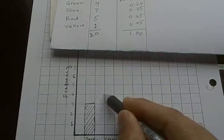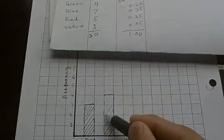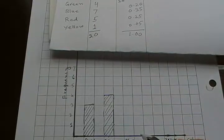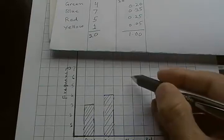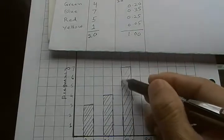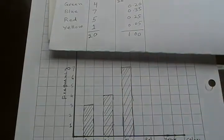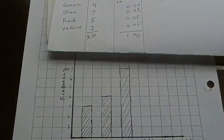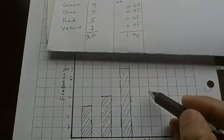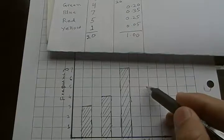Next blue - blue has a frequency 7 so you go till 7. Next is red - red has a frequency 5 so I would go like 5 is till this height.